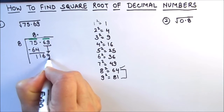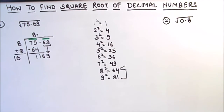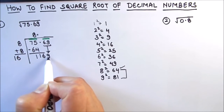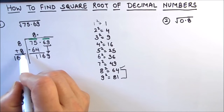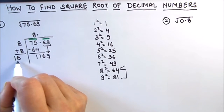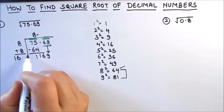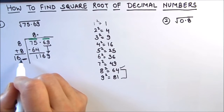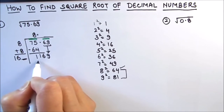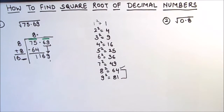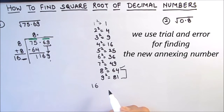We drop down the next period, which is 69, together making our new dividend 1169. We then add the quotient digit to the divisor — 8 plus 8 — giving us new divisor digits of 16. Now we need to annex a digit to 16 such that the product with that same digit gives a result equal to or just less than 1169.